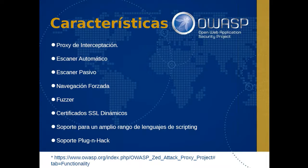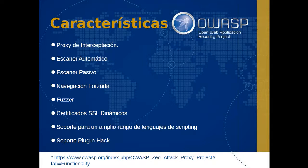Este es un resumen de sus principales características. Esencialmente es un proxy de interceptación, aunque hace muchas otras cosas adicionalmente. Incluye un escáner automático para encontrar las vulnerabilidades más comunes. Contiene también un escáner pasivo, el cual analiza el tráfico, no realiza ningún ataque, y en base a ello emite alertas. En el caso del escáner activo, este sí realiza ataques o lanza peticiones maliciosas. También tiene una navegación forzada para tratar de localizar contenidos que no tengan ningún tipo de enlace o referencia en la aplicación web.